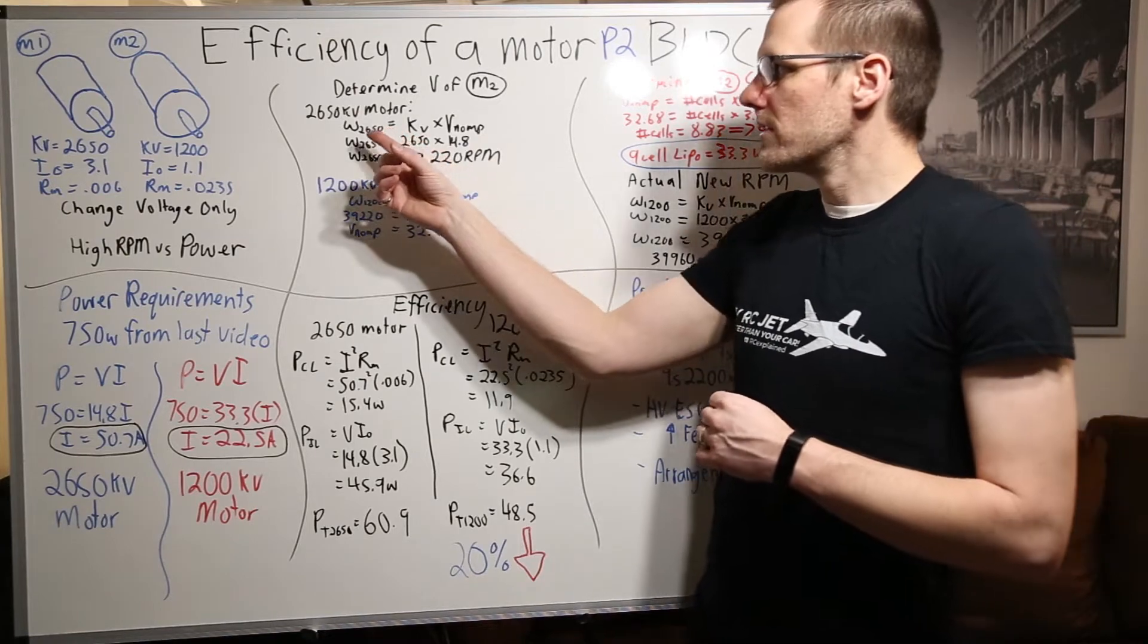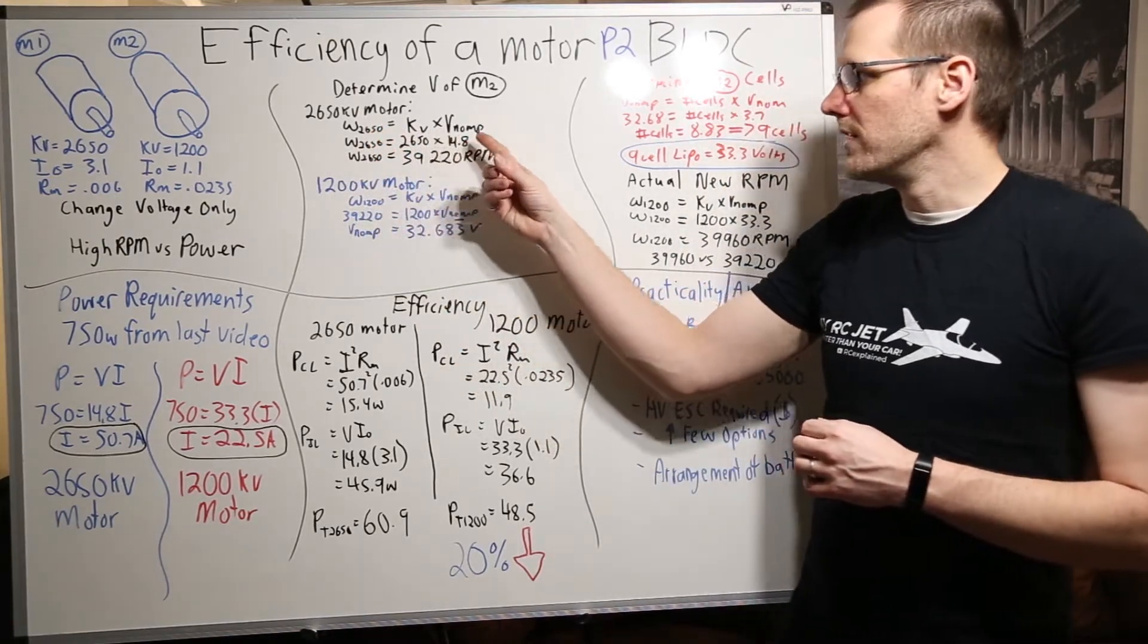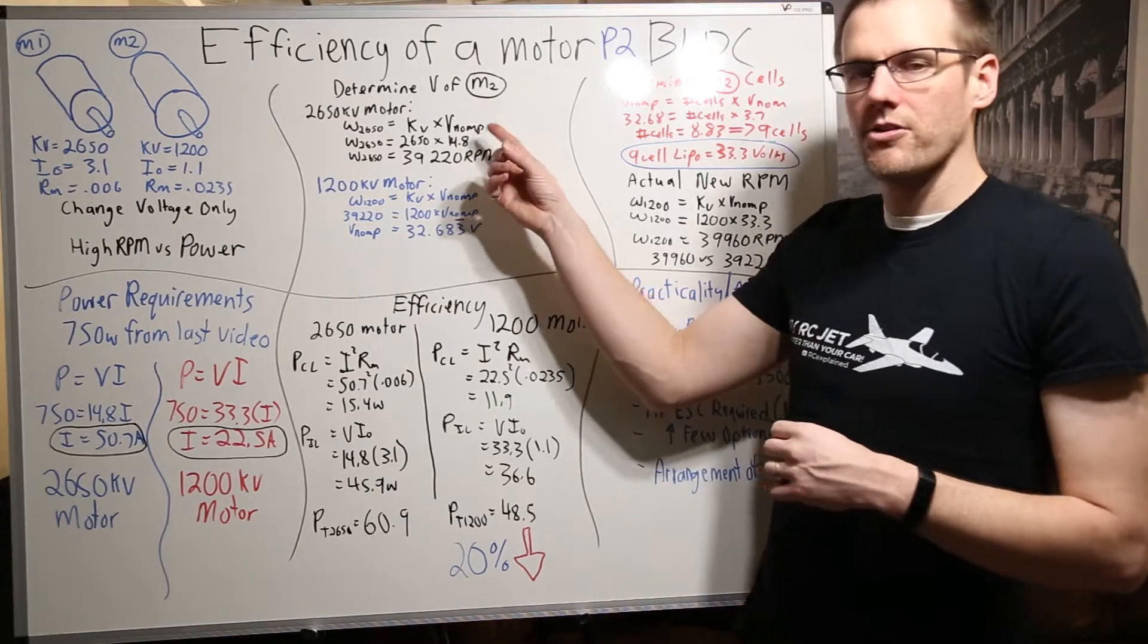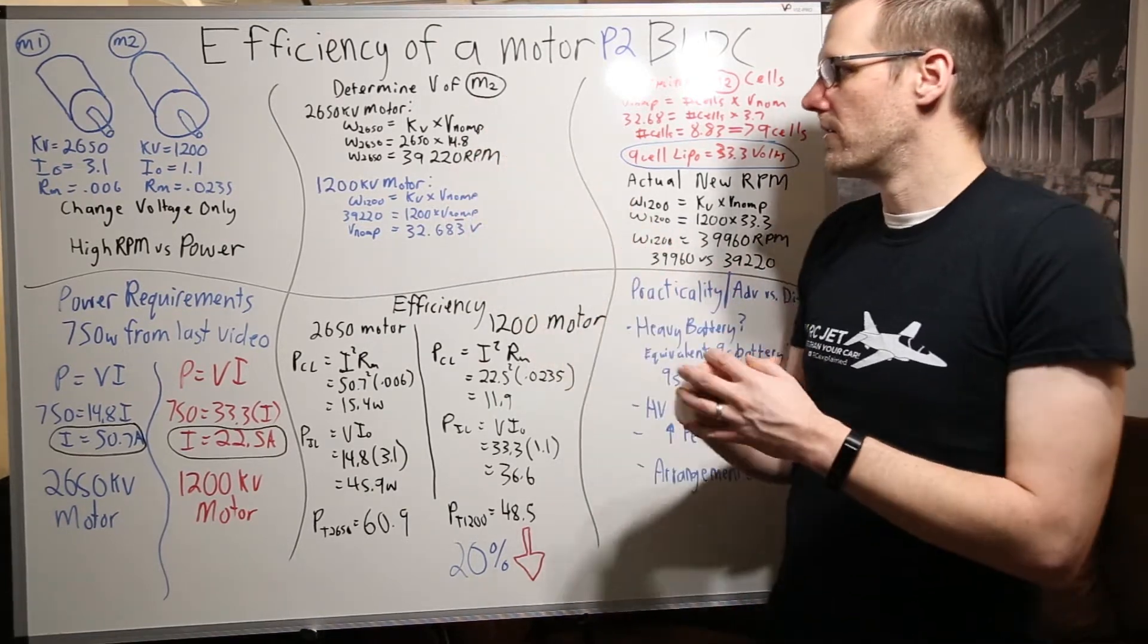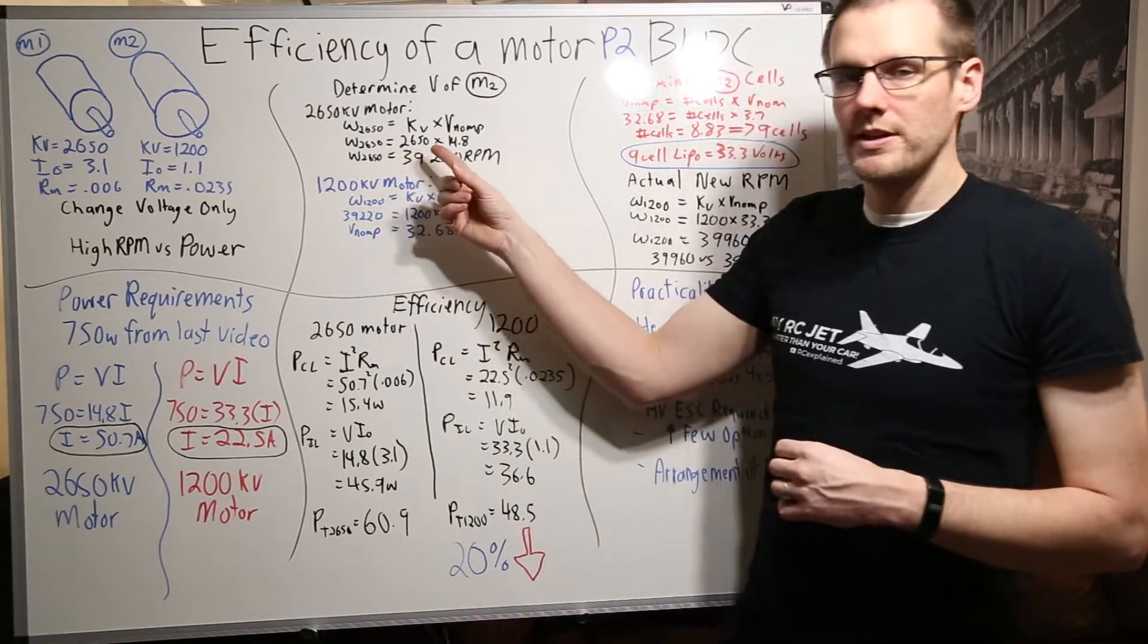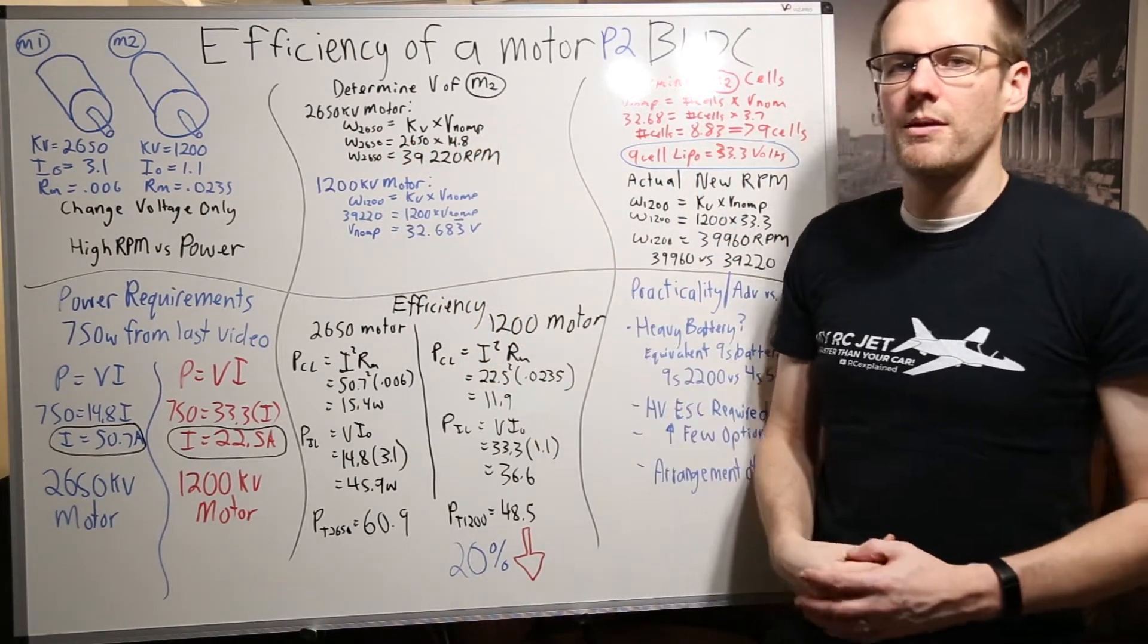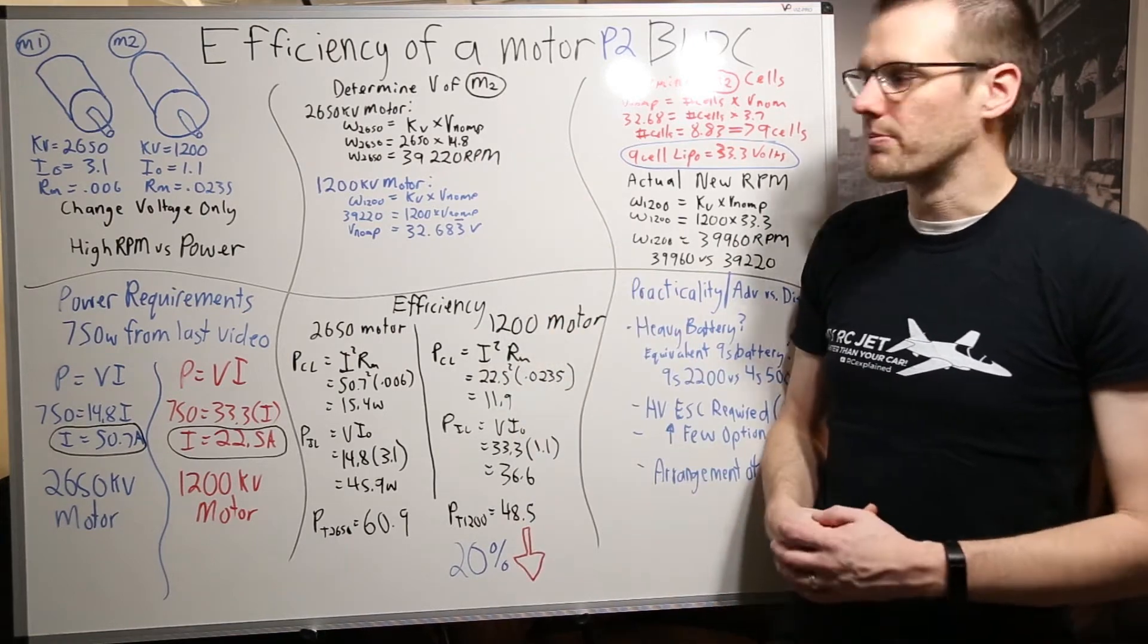What we do is we take the formula of the RPM output equal to our KV multiplied by the nominal voltage of our pack. You'll be seeing that acronym quite consistently through the video. What we do is we plug our 2650 multiply that by our 14.8 and we get a total RPM output of 39,220 RPM.